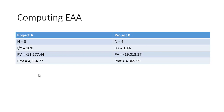So this is another approach we use for dealing with projects that have unequal lives — the equivalent annual annuity — where we're spreading the NPV over the life of the projects.